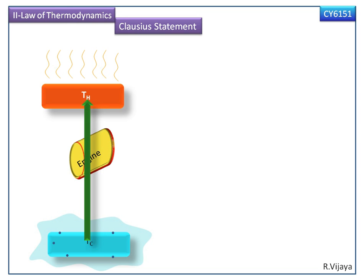The direct transfer of heat from cold body to hot body in a cyclic process is not possible. So the Clausius statement is: